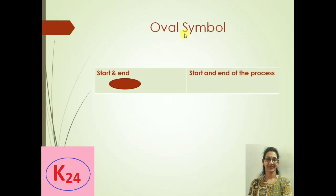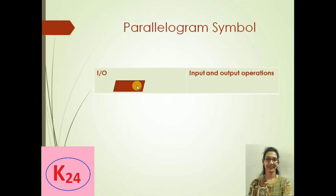To represent a flowchart we use various symbols which describe the flow of information. The first symbol is the oval symbol, which represents the start and end of the process — it is always the first and last symbol in any flowchart. The next symbol is the parallelogram, which is used for input/output operations: to get input from the user and display results to them.